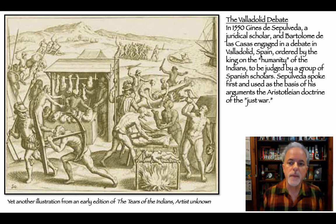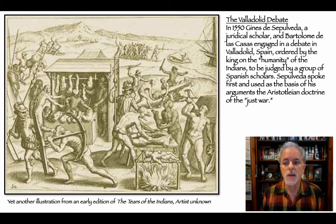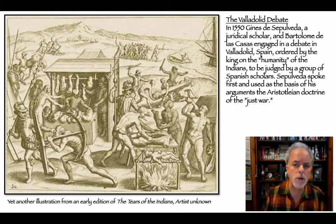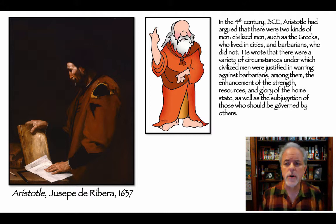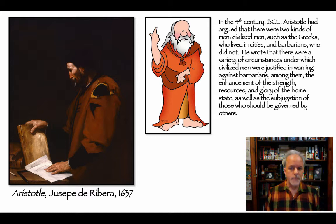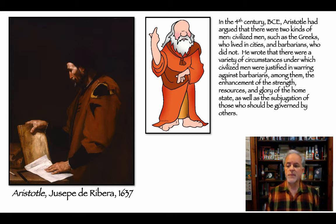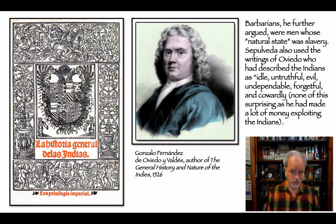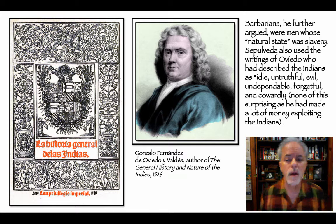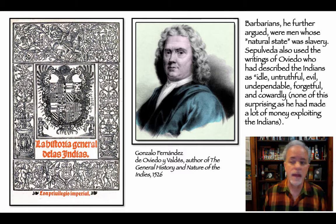In 1550, las Casas and Sepulveda, a juridical scholar, engaged in a debate in Valladolid ordered by the king on the humanity of the Indians, to be judged by Spanish scholars. Sepulveda spoke first and used as the basis of his arguments the Aristotelian doctrine of the just war. Aristotle had argued there were two kinds of men: civilized men such as the Greeks who lived in cities, and barbarians who did not. He wrote that civilized men were justified in warring against barbarians to enhance the strength, resources, and glory of the home state.